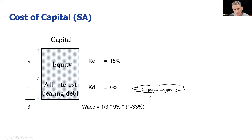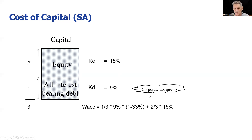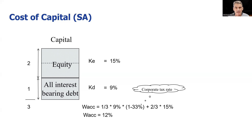We've also got to factor in the cost of equity. Two thirds of our capital is costing us 15%. Two thirds of 15 is 10% — that's what equity is costing us based on the proportion of equity. And for debt: two thirds of 9% is 6%, and one third of 6% is 2%. So we've got 10% and 2%, giving us a weighted average cost of capital of 12%.